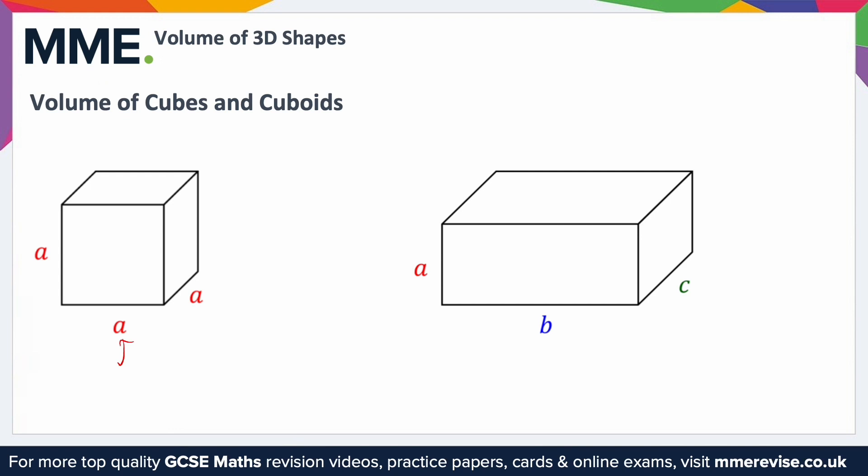So in this case, they're labelled A. They're all exactly the same, so we're going to do A times by A times by A, and that will give you the volume of a cube. Of course, you can simplify this down to just A cubed.